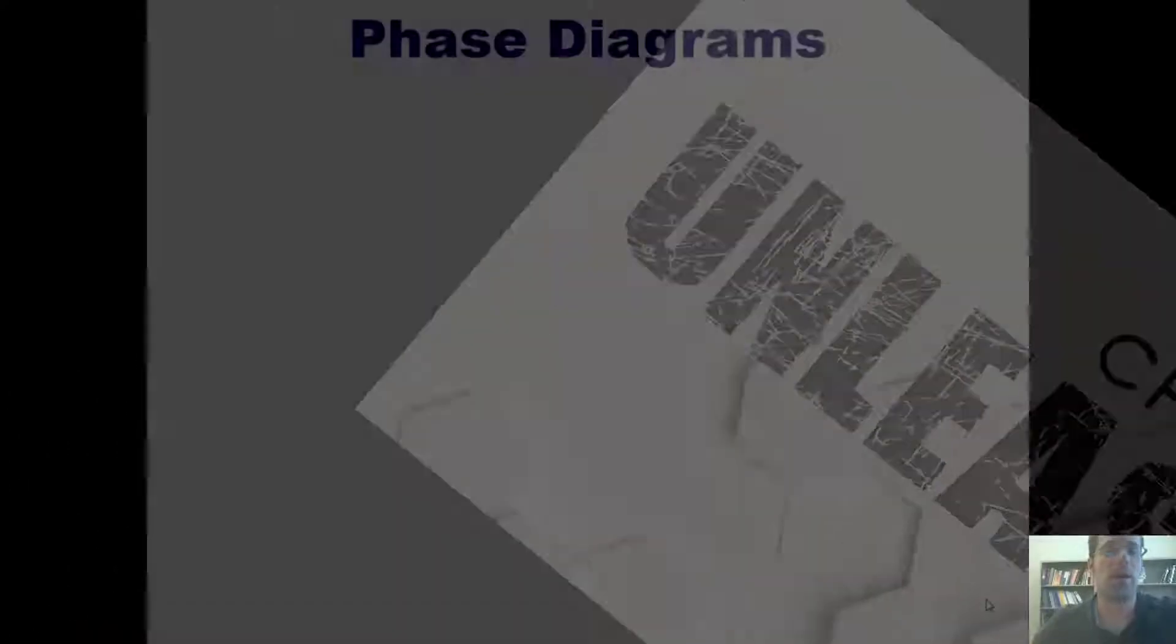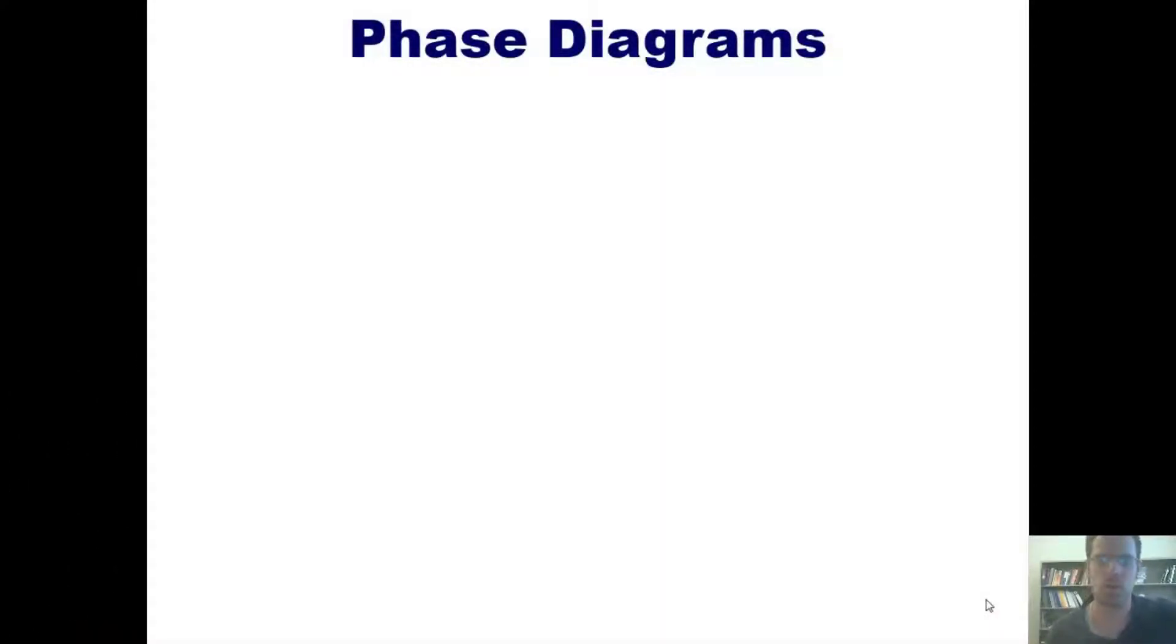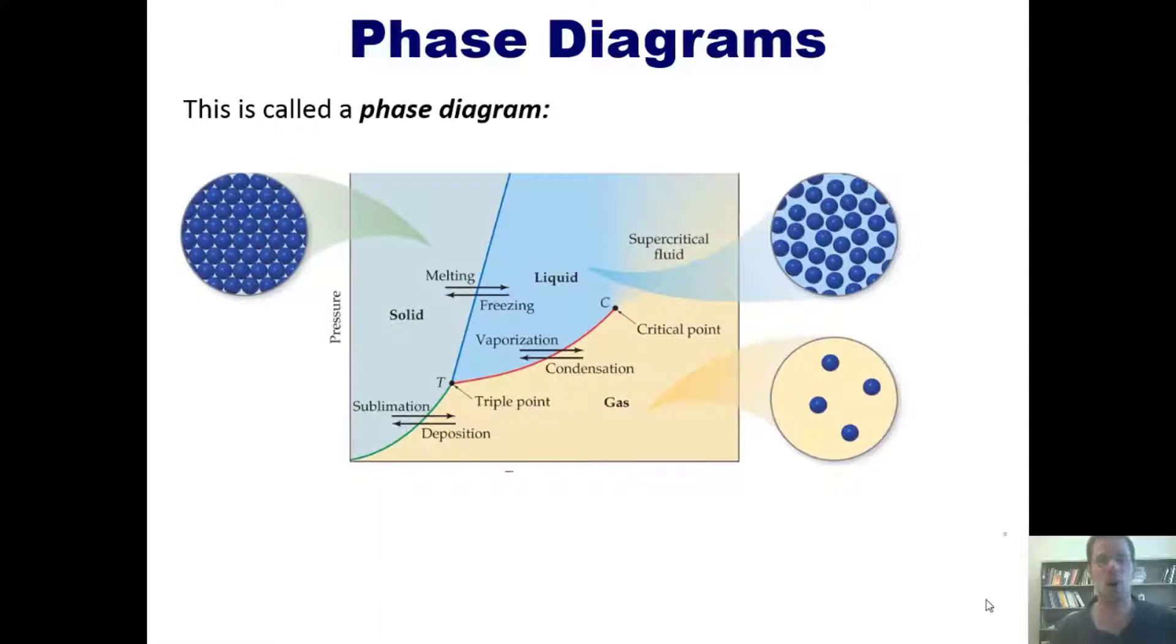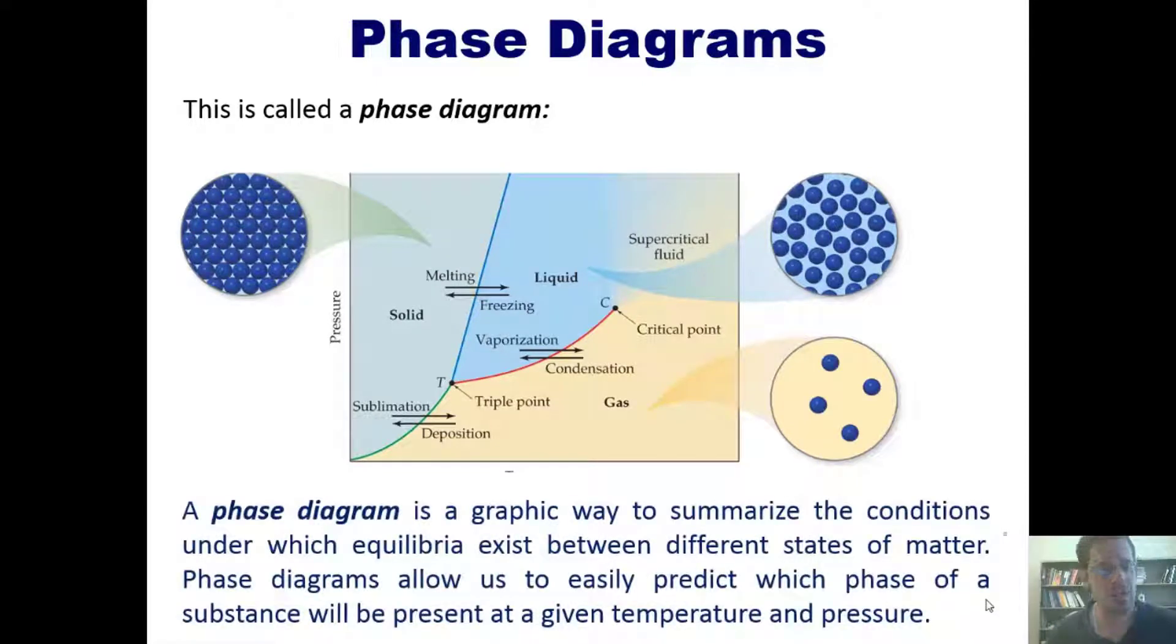In today's video I'll talk to you about phase diagrams and liquid crystals. This picture is called a phase diagram. It has lots of cute little words, colors, and fancy arrows, but what do they mean? Well, a phase diagram is a graphical way to summarize the conditions under which equilibrium exists between different states of matter. Phase diagrams allow us to easily predict what phase a substance will be at a given temperature and pressure.